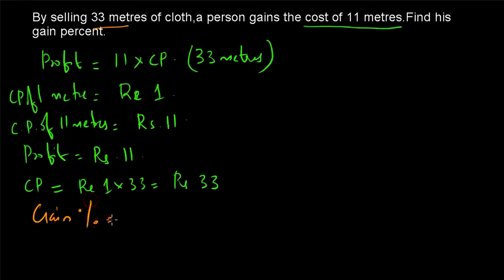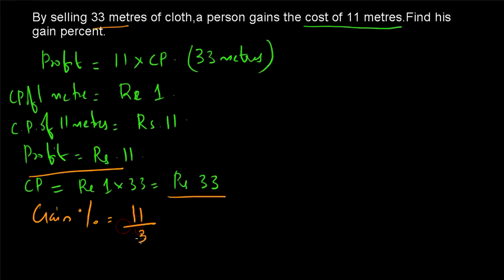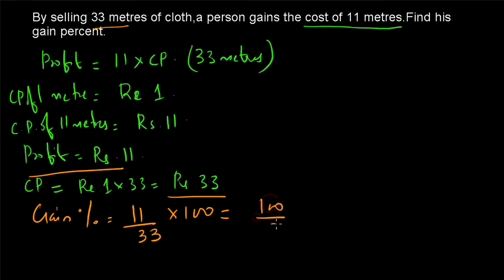So gain percentage equals corresponding profit ₹11 divided by corresponding cost price ₹33, multiplied by 100, which equals 100/3 — or 33⅓% when expressed as a mixed fraction.